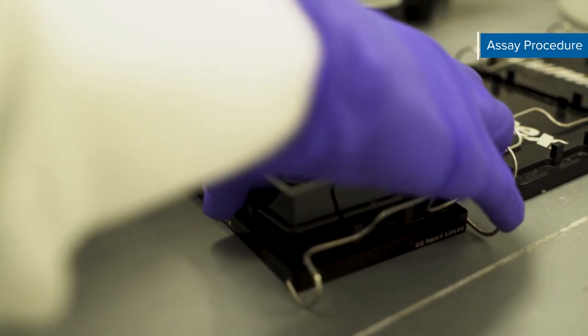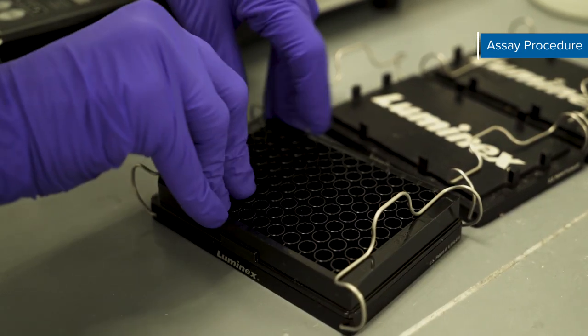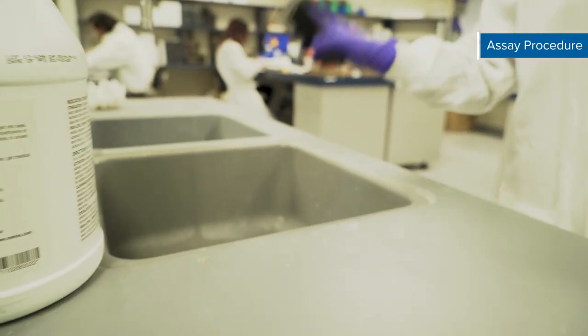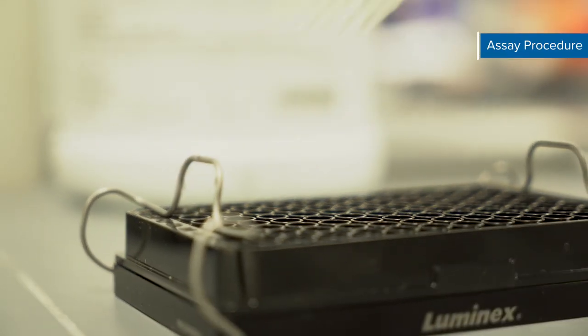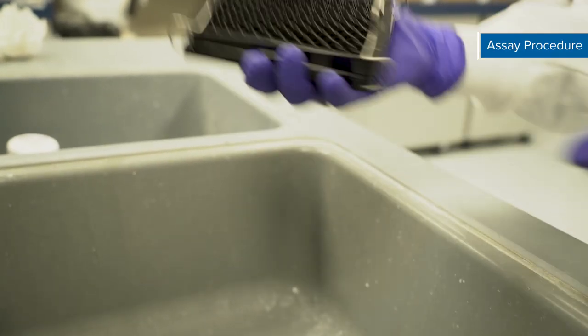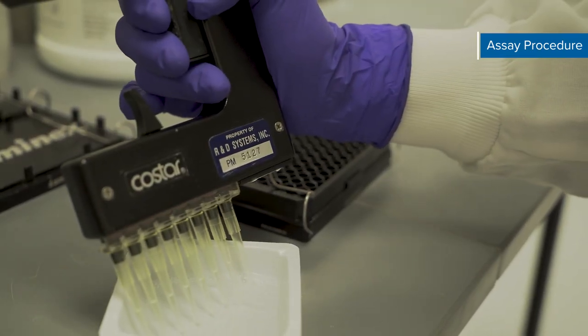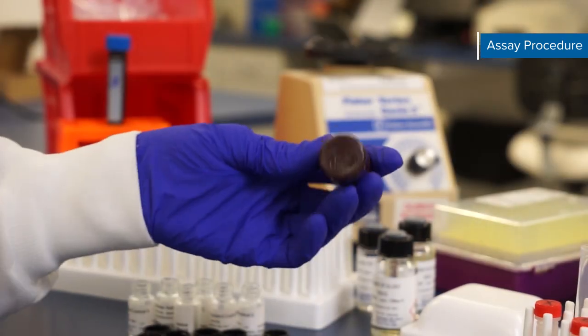After the two-hour incubation use a magnetic device designed to accommodate a microplate to wash your plate by applying the magnet to the bottom of the microplate. Allow one minute before removing the liquid. Then fill each well with 100 microliters of wash buffer and wait one minute before removing the liquid again. Do not blot as this may cause a loss of microparticles. Repeat this step one more time for a total of three washes. You may also use an auto washer if you have one available.